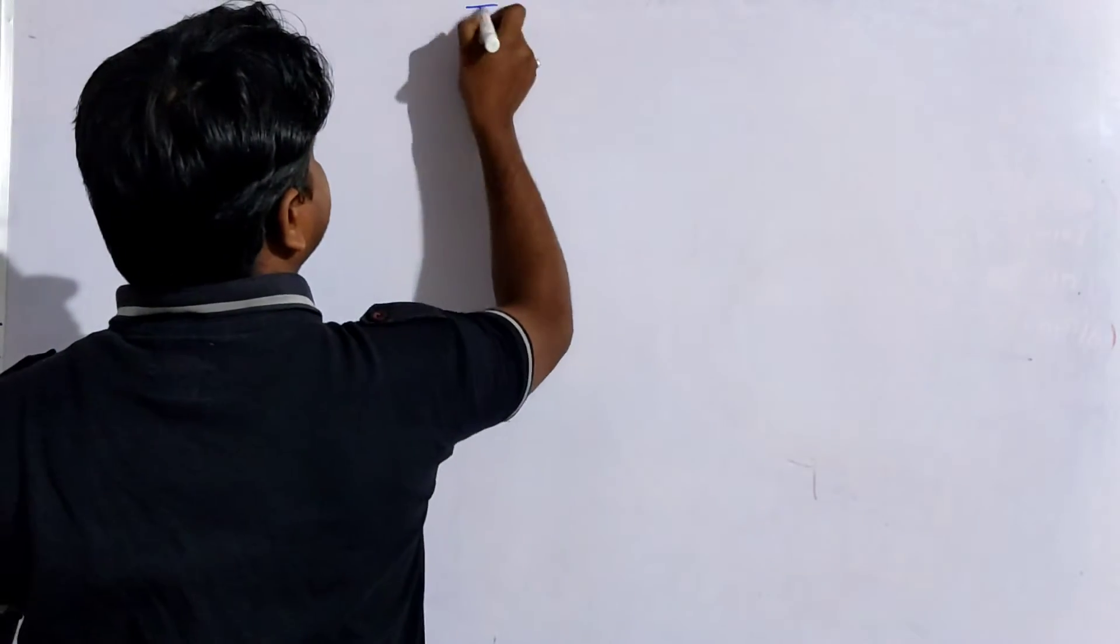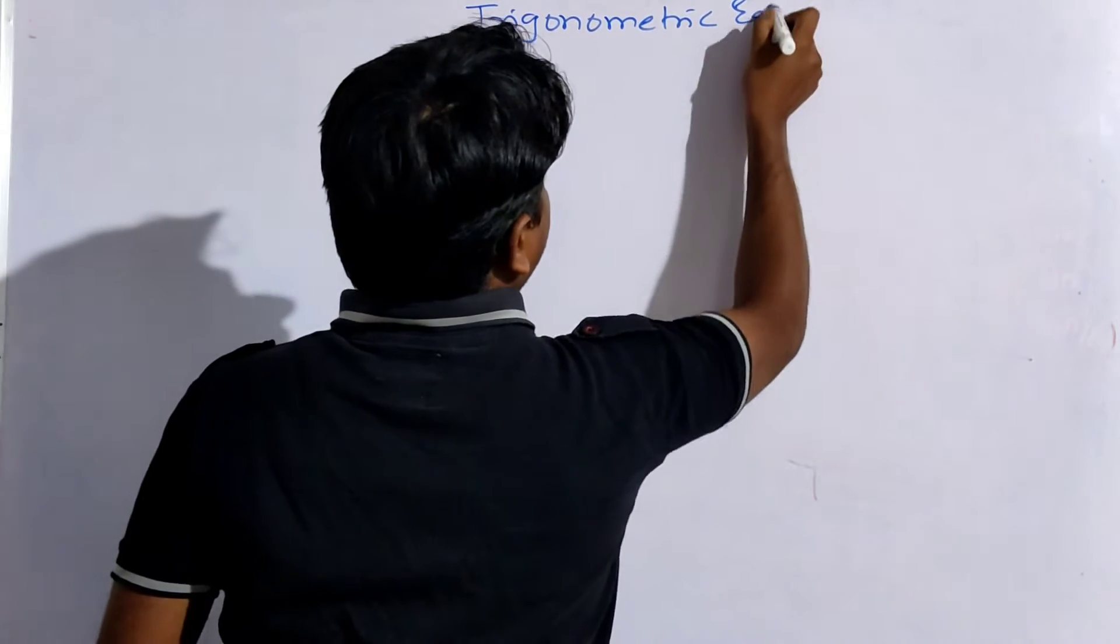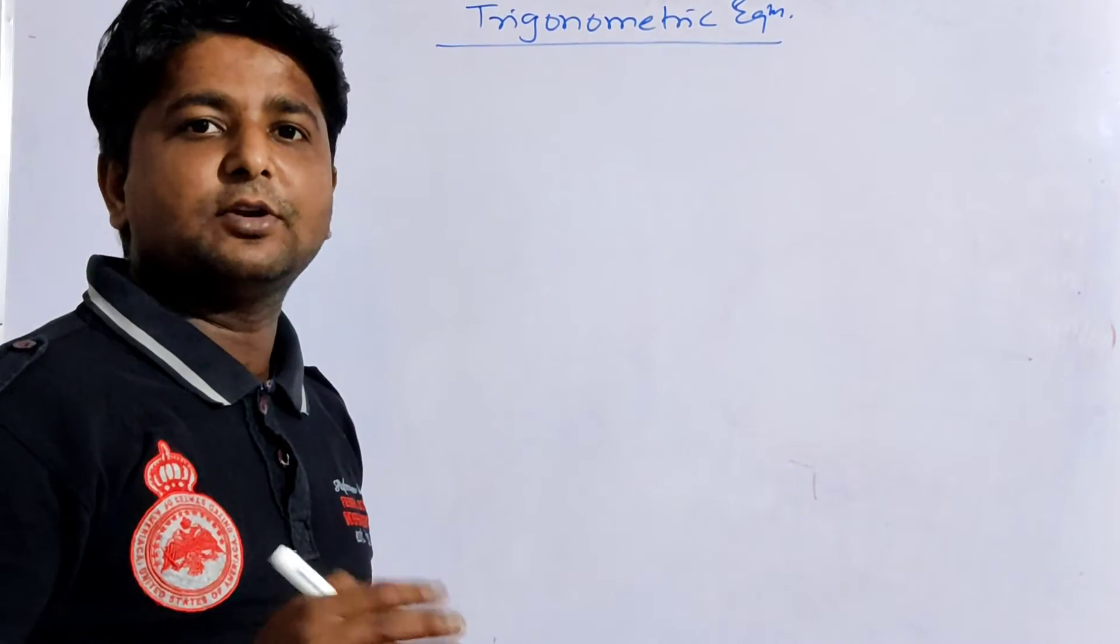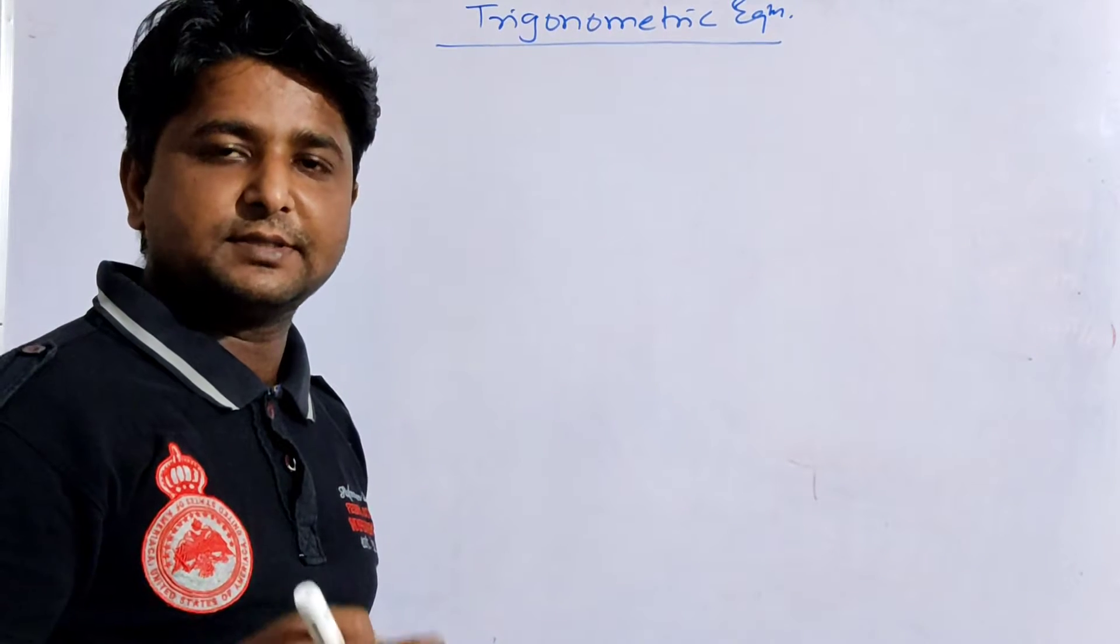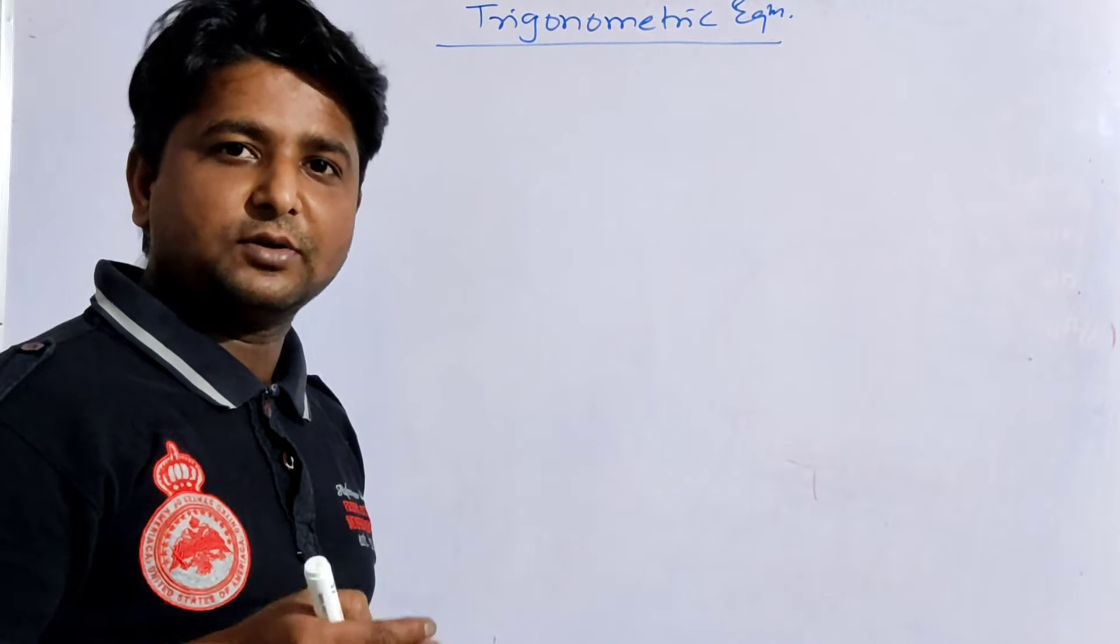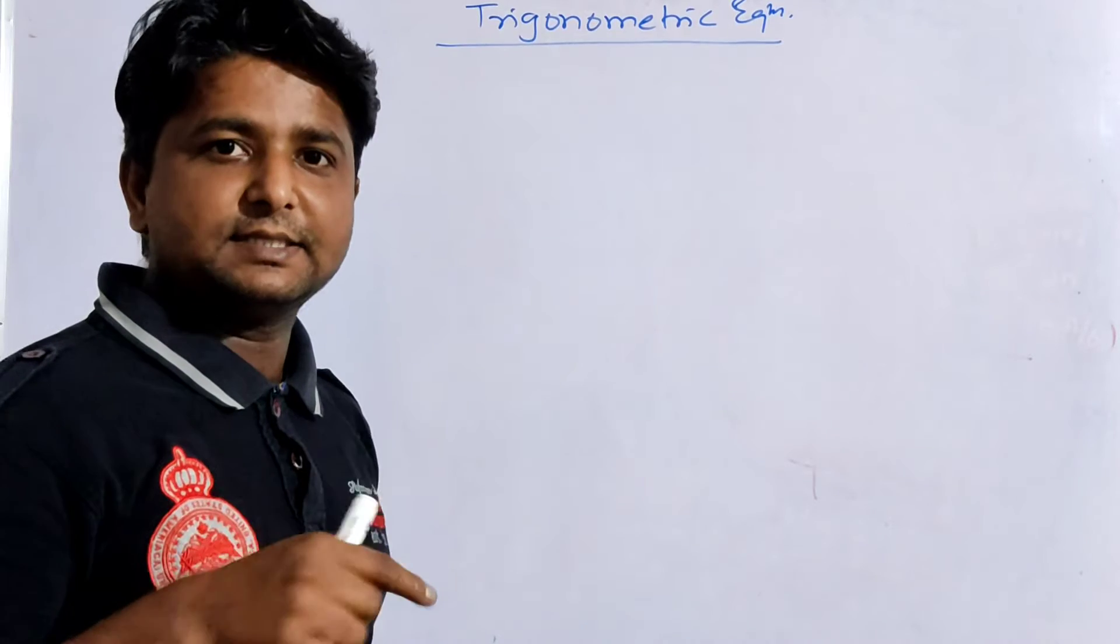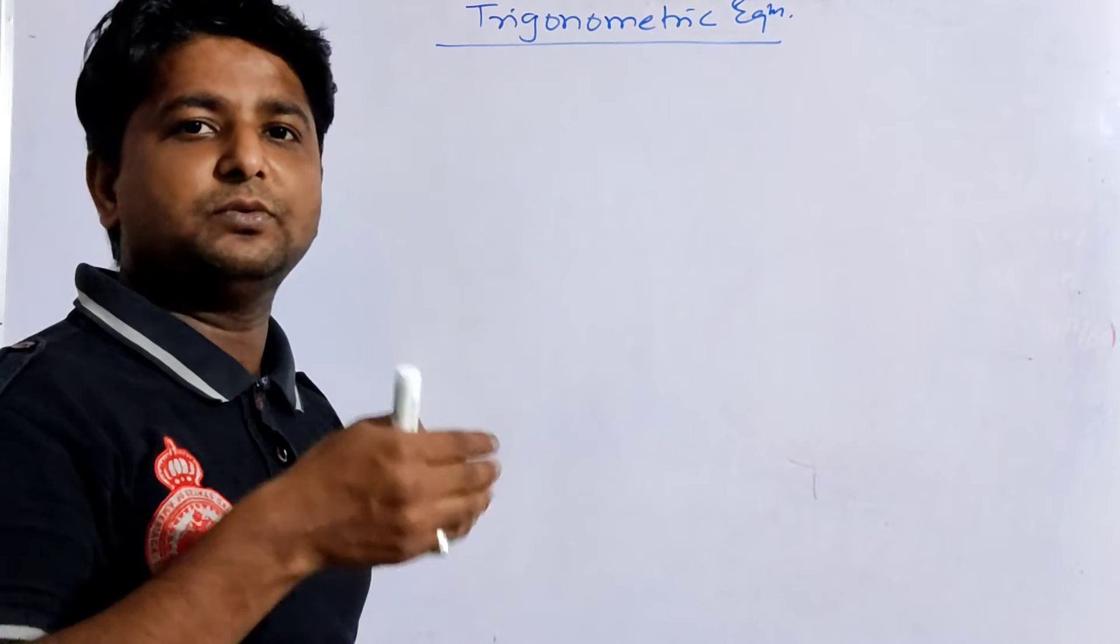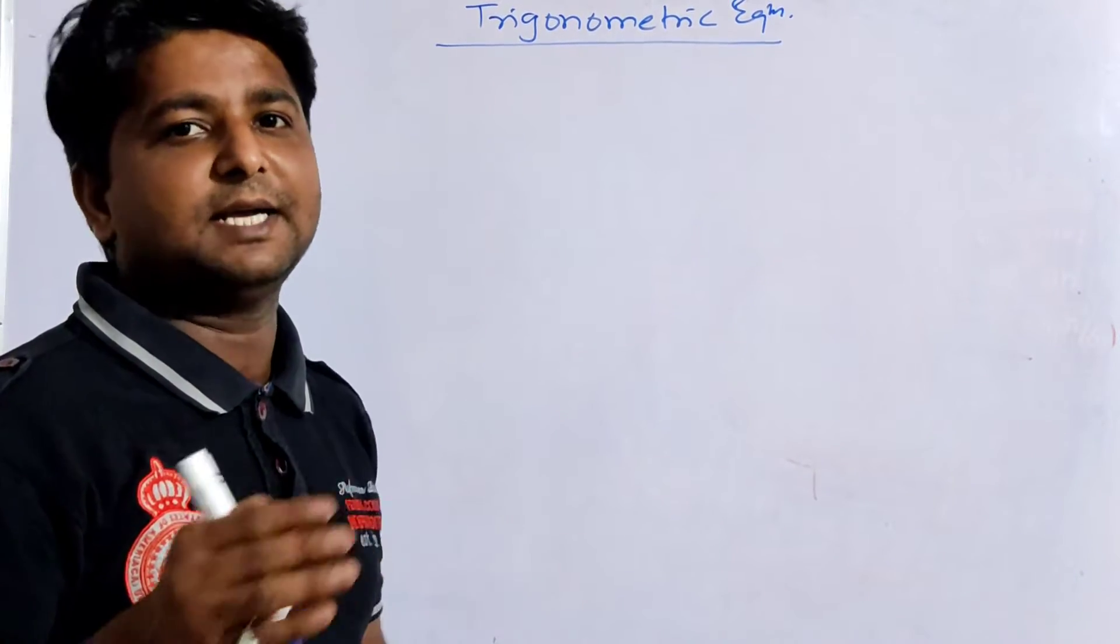We have started the lesson called trigonometric equations. In class 10th, we learned about trigonometric ratios: sin theta, cos theta, tan theta, and their reciprocals - 1 upon sin theta, 1 upon cos theta, and 1 upon tan theta. We have defined these things as ratios in class 10th. Now we will see how we can improve that definition of trigonometric ratios and convert them to trigonometric functions.